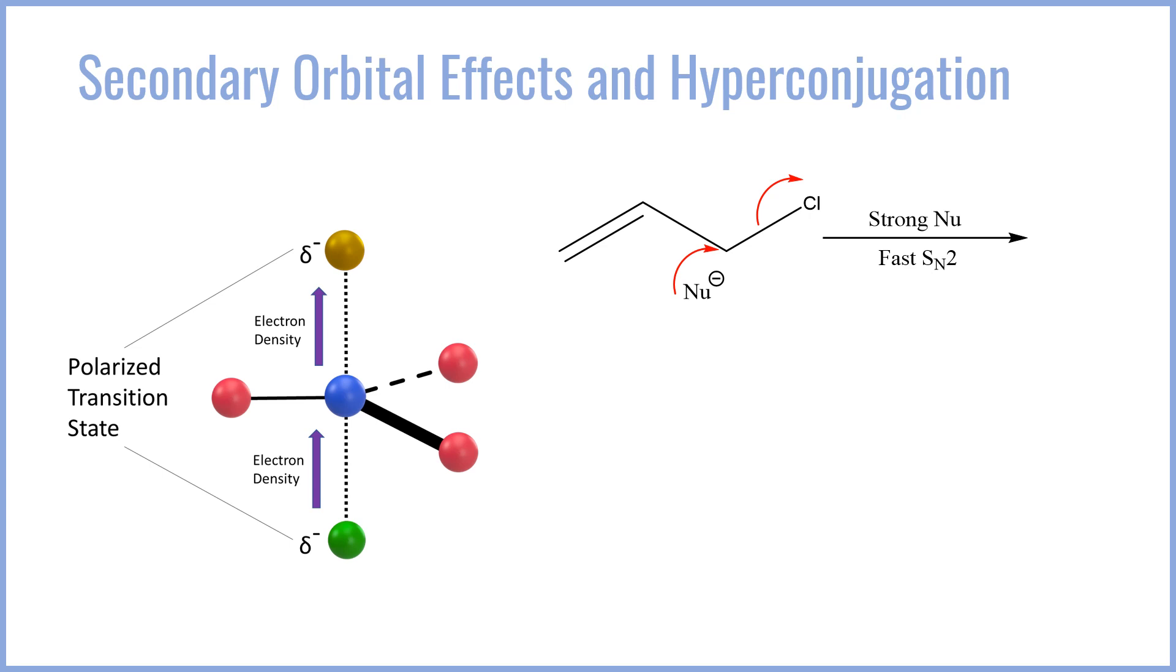what if we use SN2 forcing conditions on a primary substrate? What if we use a really strong nucleophile, something like cyanide or a thiolate, and we have an aprotic solvent like DMSO? Well in that case we can actually force an SN2 reaction. What's interesting though is that the SN2 is faster than a normal SN2. Why is that the case? Well it boils down to the transition state.